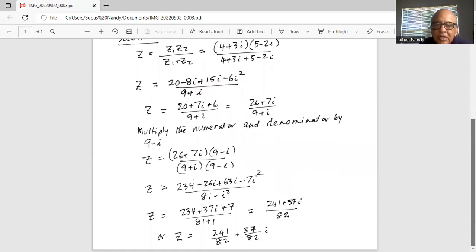Now in the numerator, we FOIL it. So 26 times 9 is 234. First term outside is 26 times minus i is minus 26i. Inside is 7i times 9, plus 63i. And then the last term, 7i times minus i is minus 7i squared.